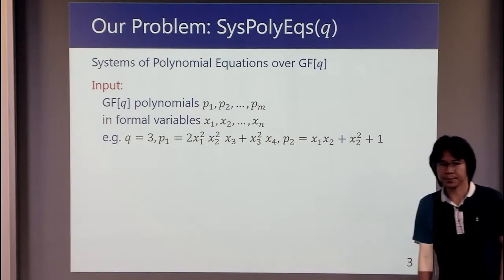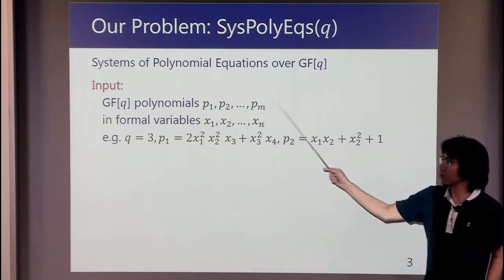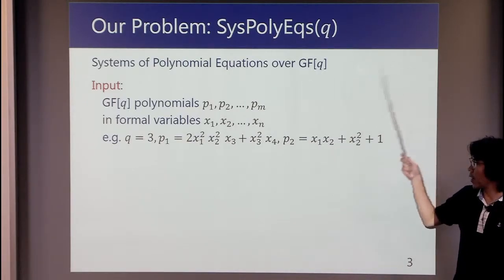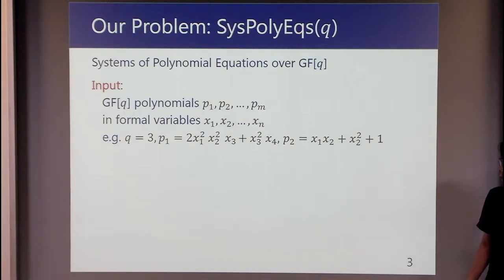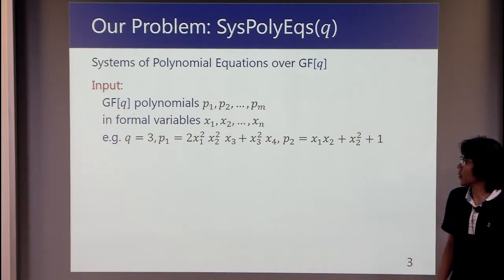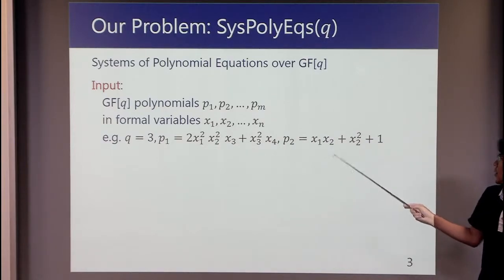Our input is GF[q] polynomials p₁, p₂ through pₘ in formal variables x₁, x₂, x₃ through xₙ, like these. So here q is 3, and p₁ is like this, and p₂ is like this.